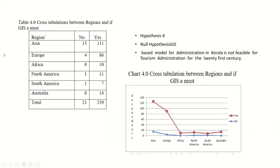A worldwide cross-tabulation on whether GIS is a must in the tourism sector shows that in Asia, 11 people agreed and around 5 disagreed. Corresponding results for other regions show that the number agreeing is greater than those disagreeing. The graphical representation shows the agreeing line in red and the disagreeing line in blue, with regions Asia, Europe, Africa, North America, and South America on the X-axis.